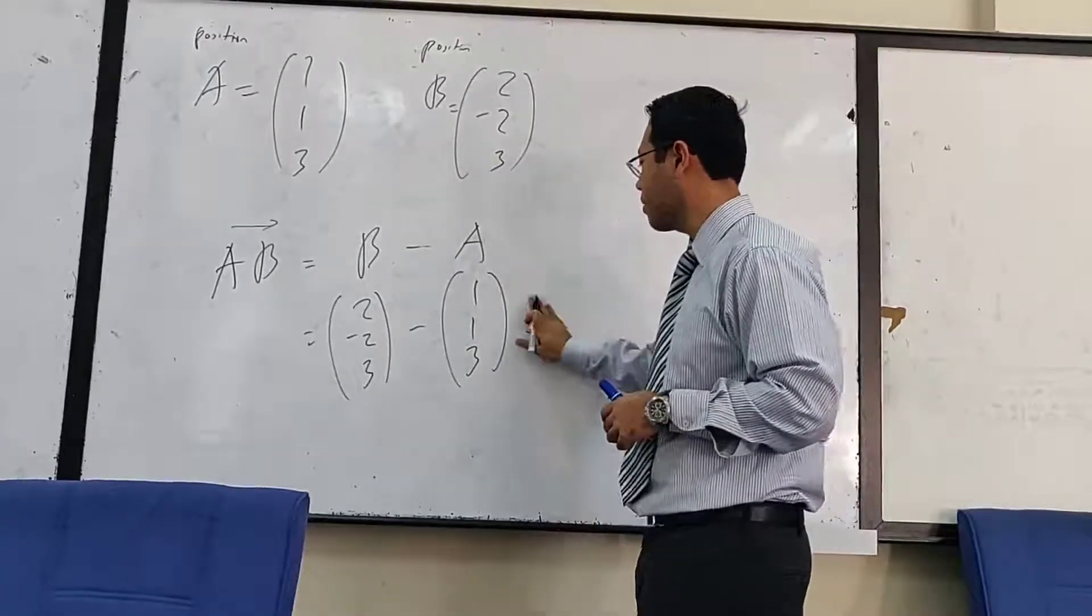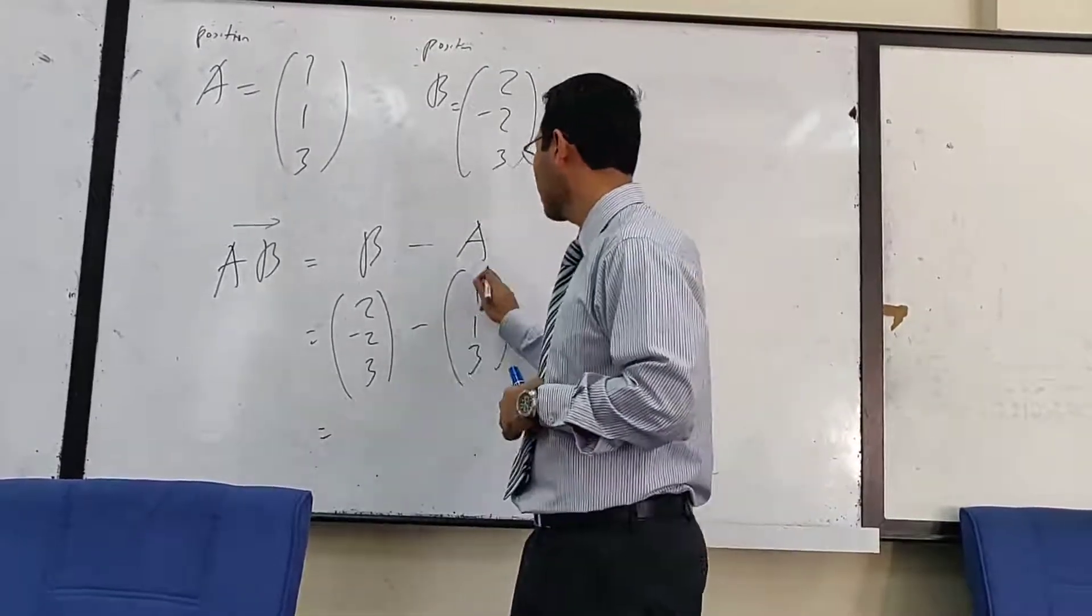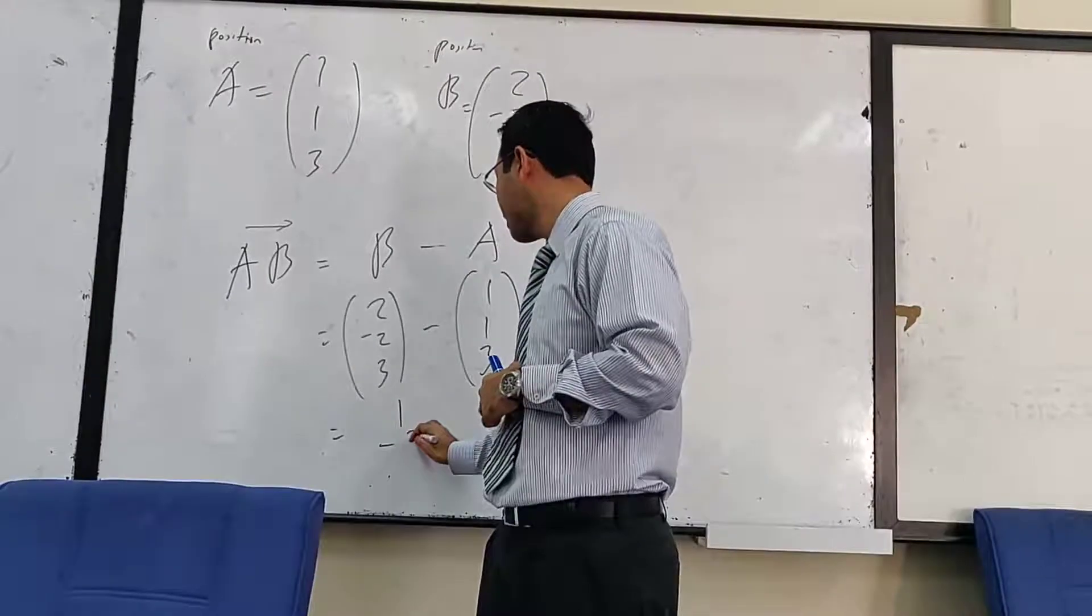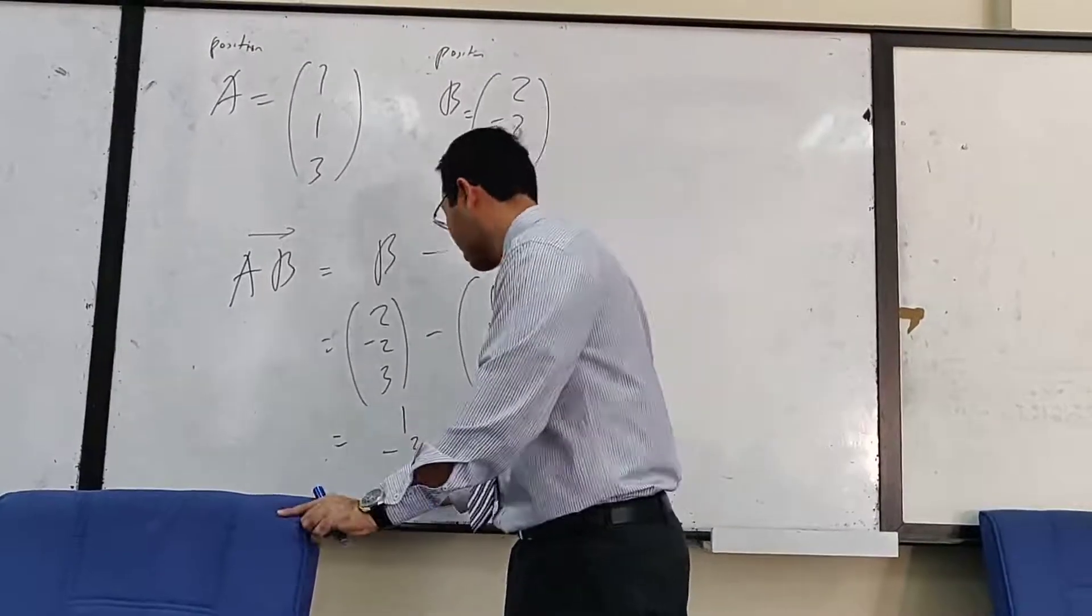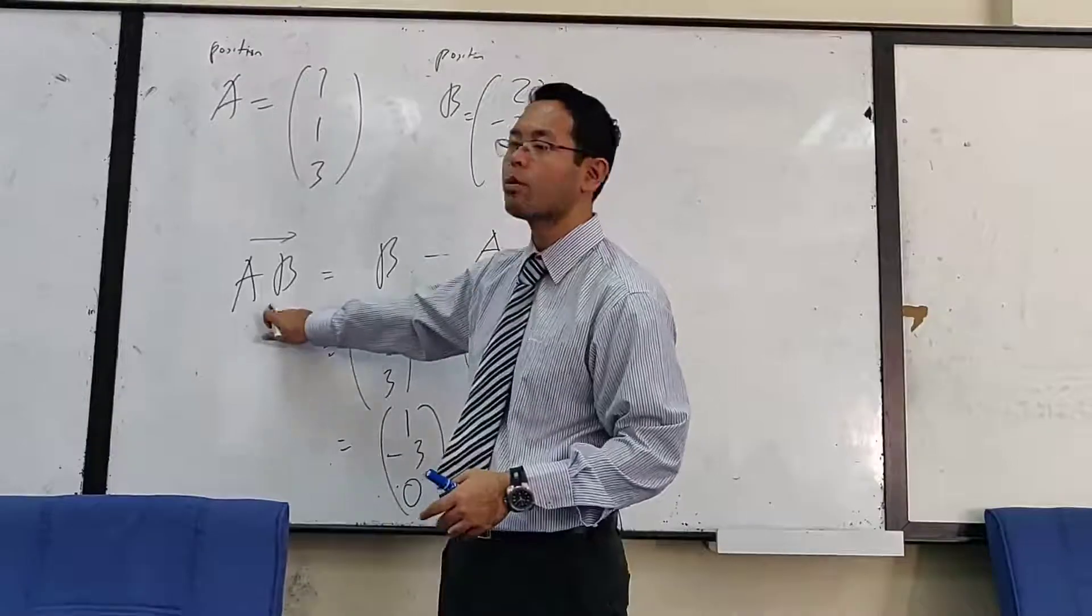So I get myself 1, negative 2, negative 1, negative 3, negative 3, 0. So this is how you find vector AB.